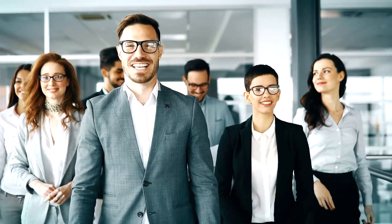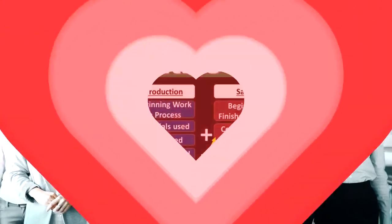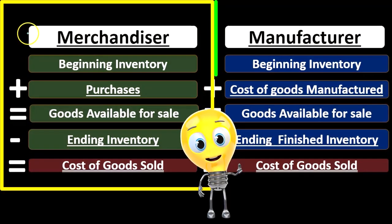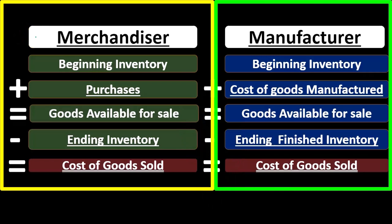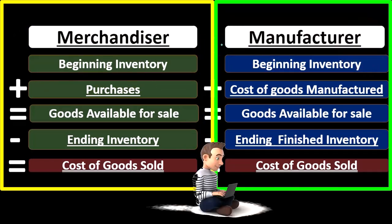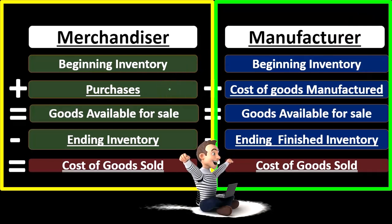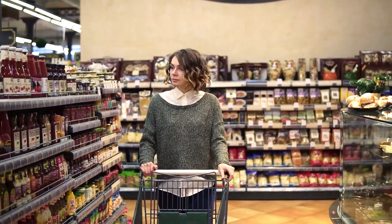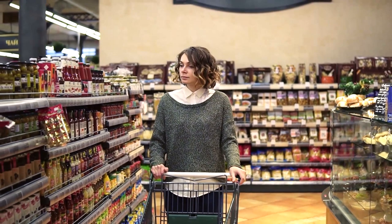We'll take a look at the costs of the manufacturing process and how they flow through it, and how we will track and organize these costs as we go. Remember that the major difference between the cost of goods sold calculation for a merchandiser — a company that purchases and sells inventory — and a manufacturer — one that makes the inventory — is that a merchandiser has purchases, while the manufacturer has the cost of goods manufactured.